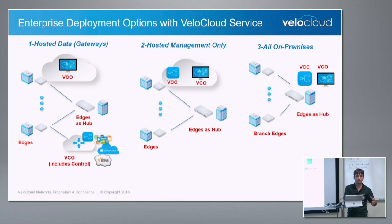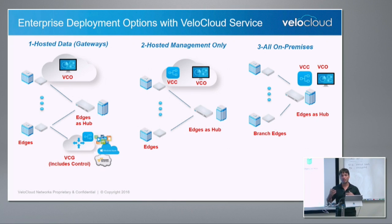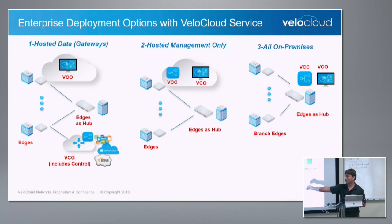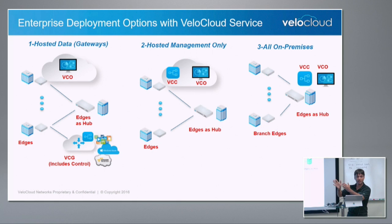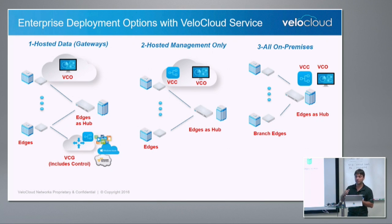Lastly, to tie everything together, if you have traffic going to the cloud — whether AWS or Office 365 — you can use one of our cloud gateways and send select traffic to it. So it starts from all on-premise, you can have management control in the cloud, and you can have data plane in the cloud as well. It's very flexible in terms of how the SD-WAN nodes are deployed, and we have seen wins in all of these different areas.